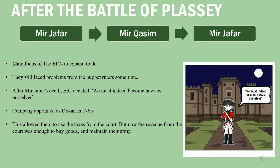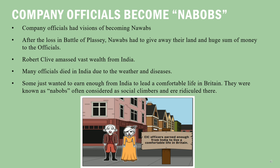With the death of Mir Jafar, company officials finally decided they needed to be Nawabs themselves. In 1765, the Mughals appointed the company as the Diwan of the Bengal province, allowing them to use the vast resources of Bengal. Now they could use money from the Bengal treasury — this solved the East India Company's financial problem. They now had enough money to buy goods from India and sell them at higher rates in England, unlike earlier when they used gold and silver from Britain.